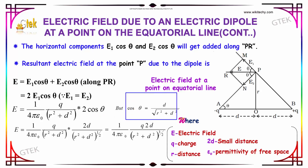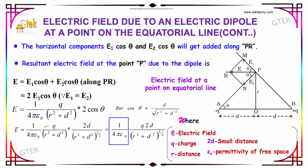We know that cos θ equals D divided by the square root of R squared plus D squared. Substituting this, we get 2 times D divided by R squared plus D squared to the power one-half. Multiplying through gives 1 over 4π epsilon-naught, with numerator 2QD. In the denominator, combining powers: R squared plus D squared to the power 1, times R squared plus D squared to the power one-half, gives R squared plus D squared to the power 3 over 2.